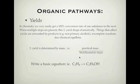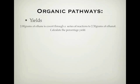Let's have a little example of calculating the percentage yield in the reaction. Here it is: 2.0 grams of ethane is converted through a series of reactions to 2.3 grams of ethanol. Calculate our percentage yield. Now, let's have a look at how we do this.